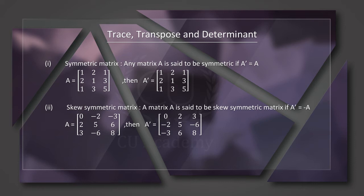The transpose of this matrix is [1, 2, 1; 2, 1, 3; 1, 3, 5]. Notice the transpose — comparing the two matrices, they are the same. So this is a symmetric matrix, because A-transpose equals A.